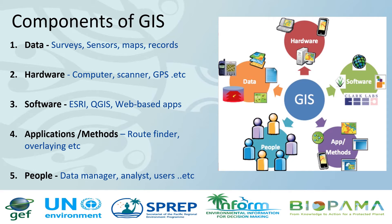The fourth component is method and application. These are the algorithms that work inside a GIS that help us solve spatial problems. The last but not least component is people. People are very important in GIS, and the word information itself should emphasize why humans are important, because GIS plays an important role in converting data into information for human consumption. This includes data managers, who are responsible for taking care of the data; data analysts, who process the data and ask questions from the data; and data users, who take those answers and make informed decisions.